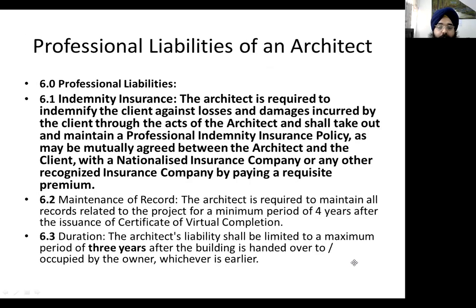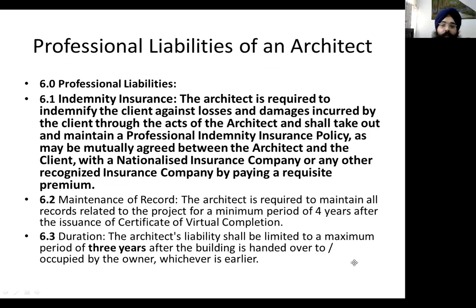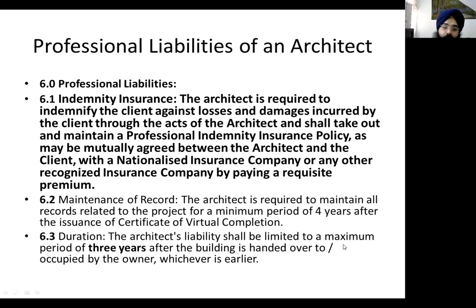The professional liabilities of an architect are three. First, the architect must have indemnity insurance — the architect is required to indemnify the client against losses and damages incurred through the architect's acts, and shall take out and maintain a professional indemnity insurance policy as mutually agreed between the architect and the client. Second, the architect must maintain records for a minimum period of four years after the completion certificate is issued. Third, the duration for which the architect is liable is three years after the building has been handed over to the owner.